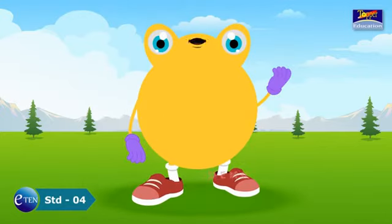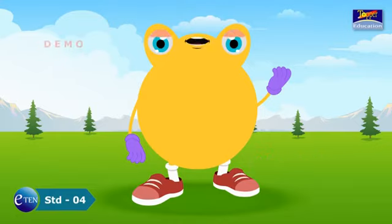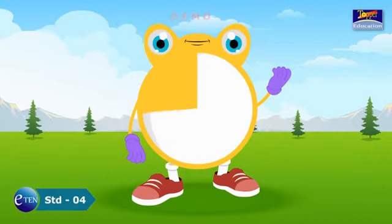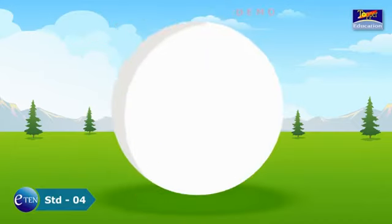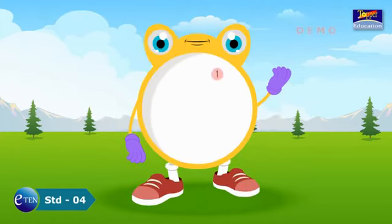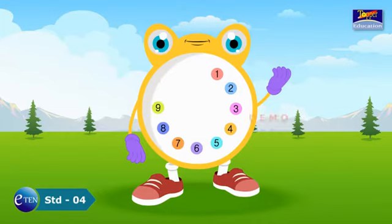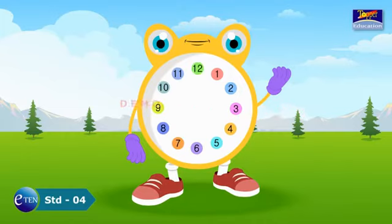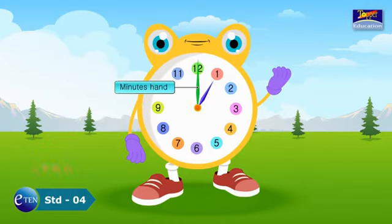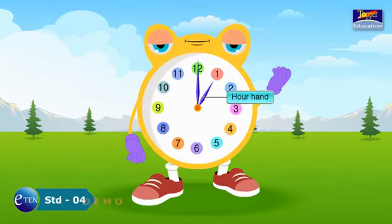You are familiar with the face of a clock. Let's look at the face of a clock again. The clock is a circle. It has 12 numbers placed at equal distances. These are 12 hours. The clock has two hands — a minute hand and an hour hand.